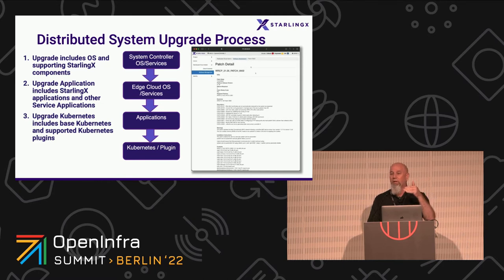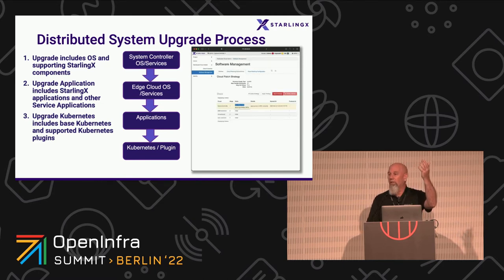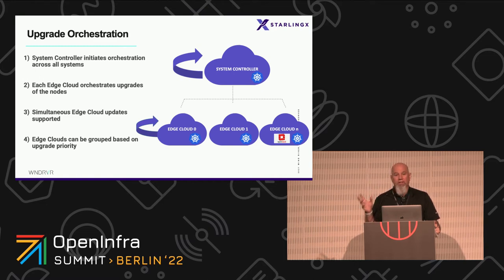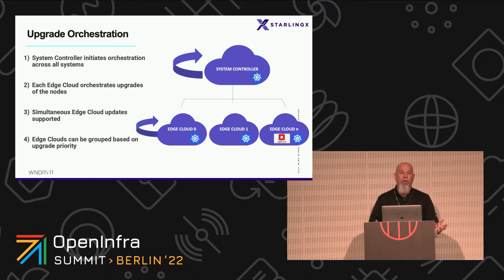From the system controller's point of view, it does itself first, then tells the subclouds to orchestrate their upgrades. The system controller also supports edge cloud grouping — you can create specialized groups that allow you to upgrade only certain groups at a time during a particular upgrade and orchestration event.